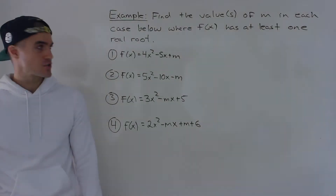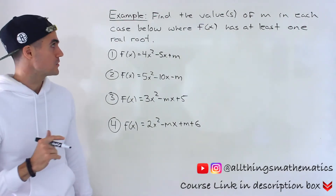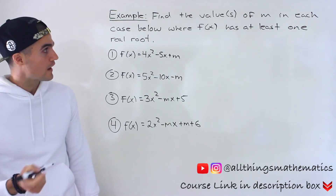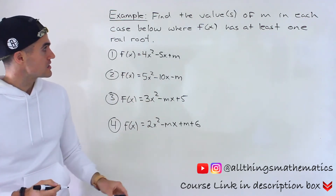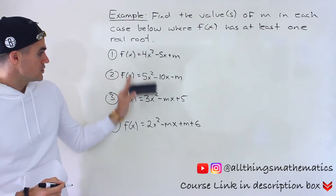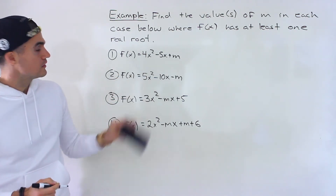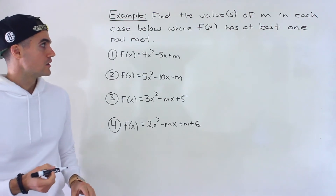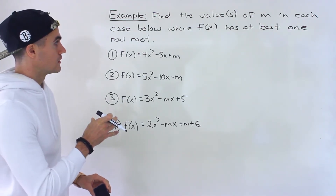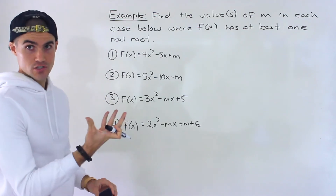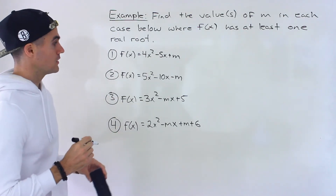What's up everyone? Welcome back. Patrick here. Moving on to another question dealing with the discriminant. We have to find the value or values of m in each of these cases where each of these functions has to have at least one real root, meaning that it has to have at least one x-intercept.